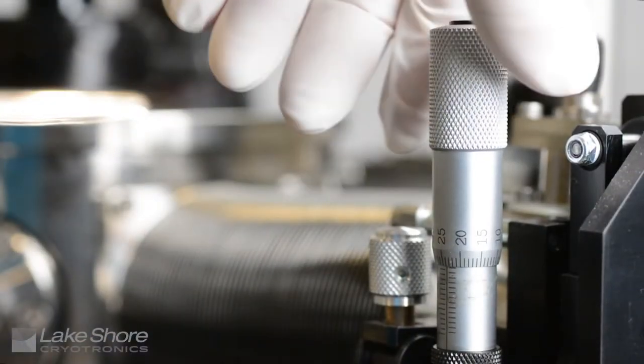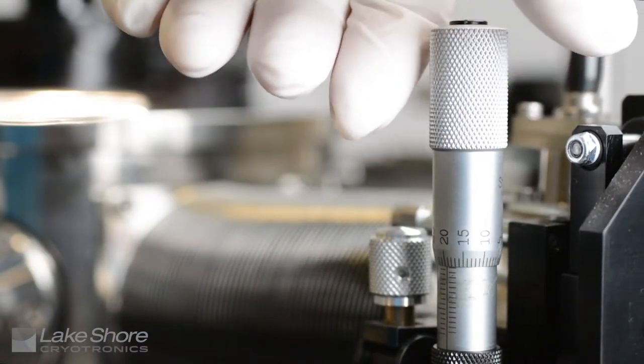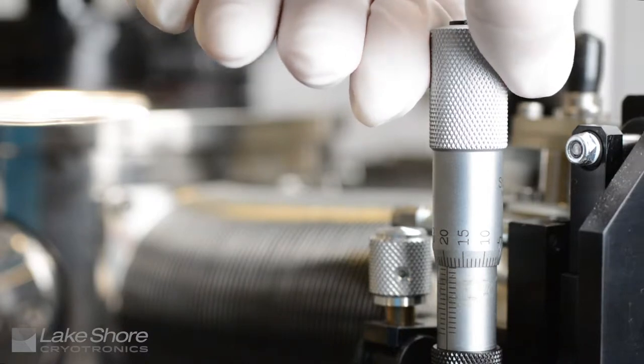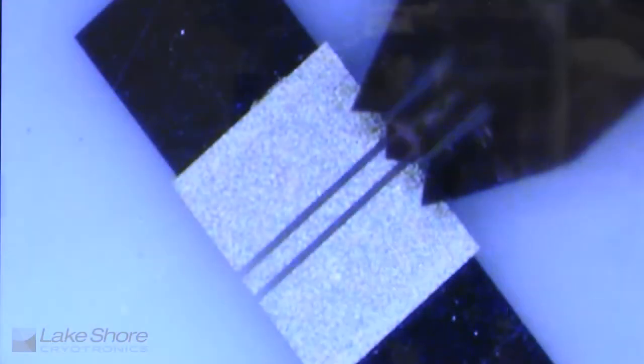Use the z-axis micrometer or z-axis adjustment to lower the probe tip until the tip begins to come into focus at a height that is at least 3 to 4 millimeters above the sample.